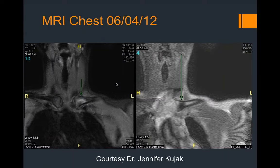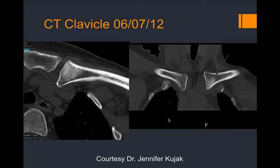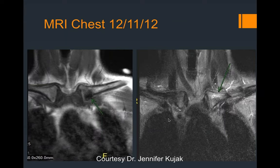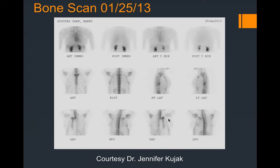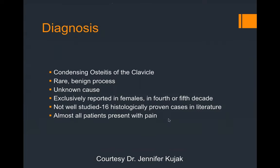A companion case shows a STIR image with increased signal in the left proximal clavicle, low signal on T1-weighted image, and corresponding CT findings — this is condensing osteitis of the clavicle. With increased sclerosis and increased uptake, it's concerning for osteitis related to a traumatic or infectious process.